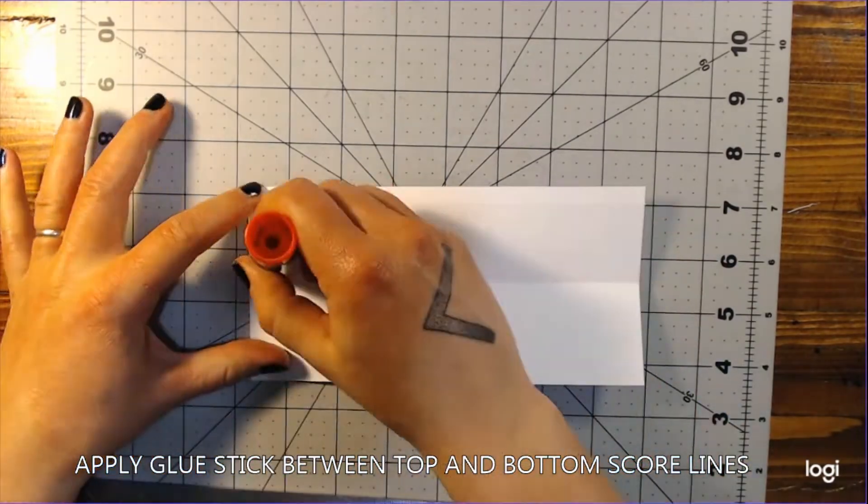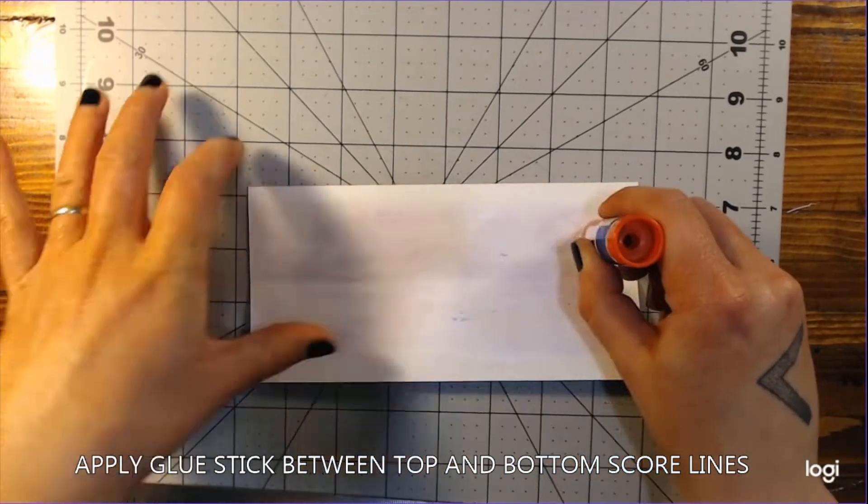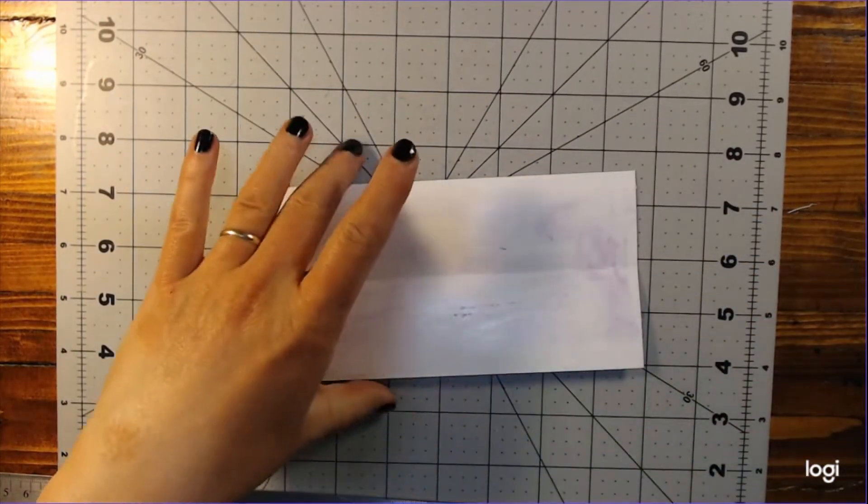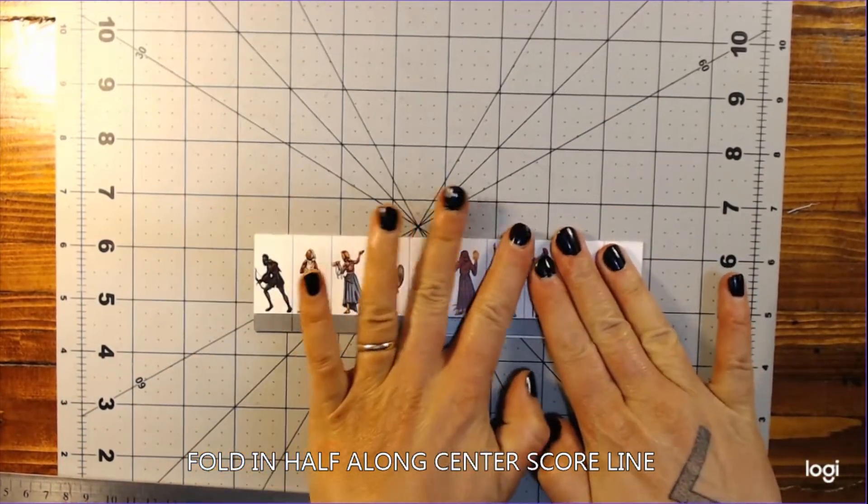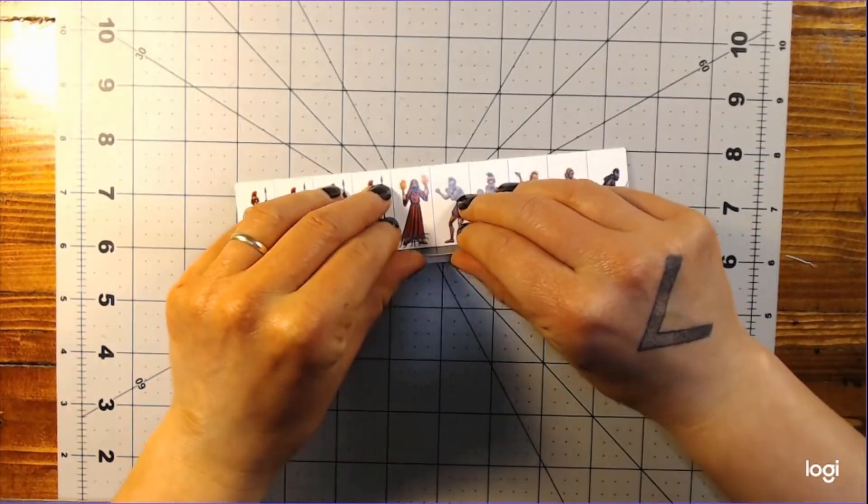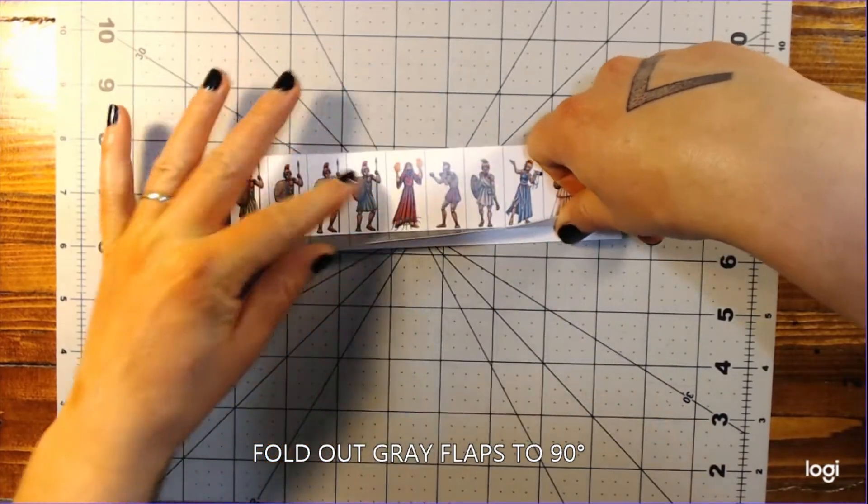Next, you will take a glue stick and cover the backs of the figures. Stay between the outer score lines and do not get glue on the backs of the grey flaps. Remember, those are for a later step. Once you have the back of the cardstock covered in glue, fold the block in half again and press gently so the figure's front and back views are stuck together. Then, gently fold out the bottom grey strip to be perpendicular with the figures. Do this on both sides.